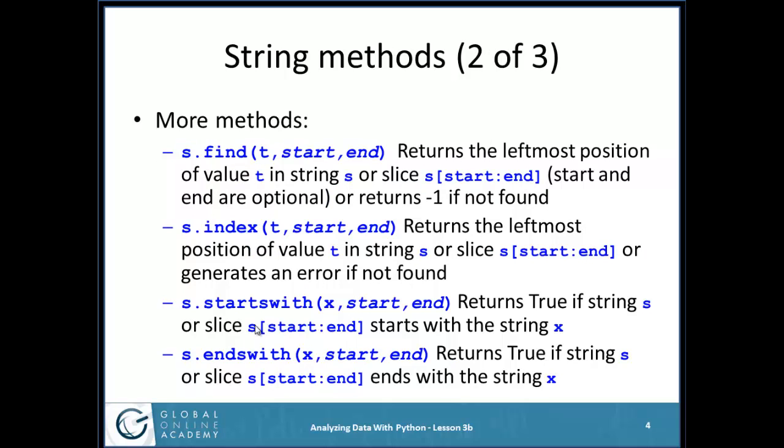Here's some more methods. Instead of changing upper to lowercase, here's where we can find out what's in a string. If I do S.find, and I give it T, a value within the string, and an optional start and end, if I leave them out, it looks in the whole string. If I put them in, it works just like a slice. It returns the leftmost position of value T, or negative one if not found. So I can look for, is there an X in the Quick Brown Fox? And if there is, it'll come back and say, yes, it's in position 18, or it's in position 13. Or if there wasn't one in there, it would return a negative one.